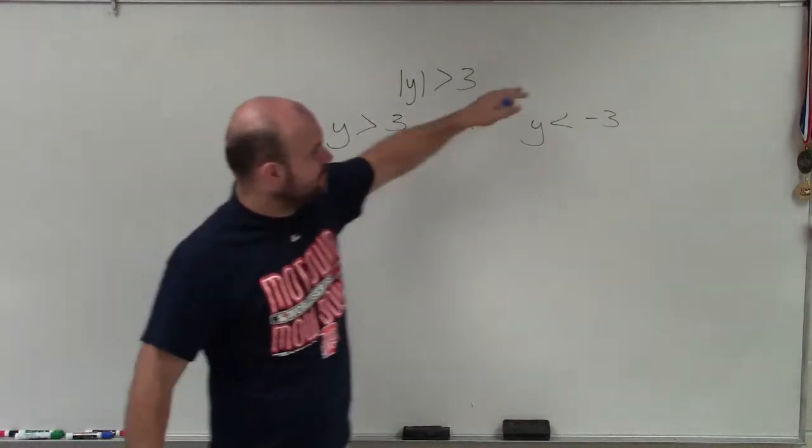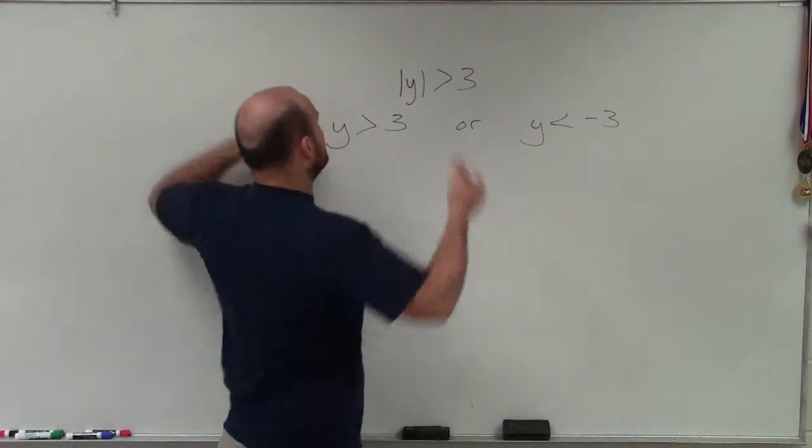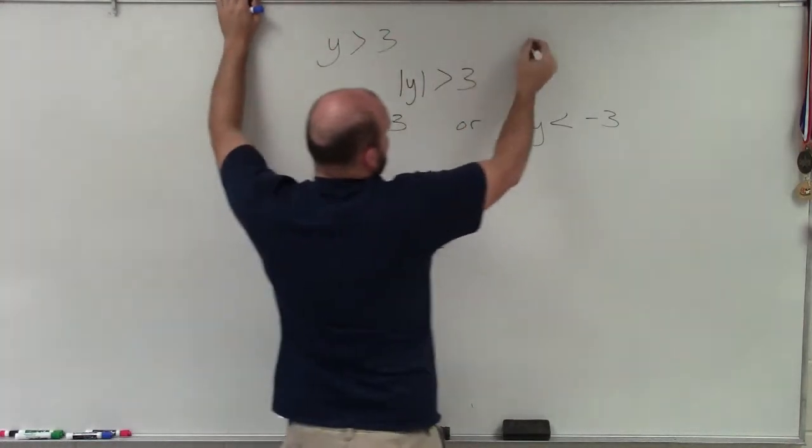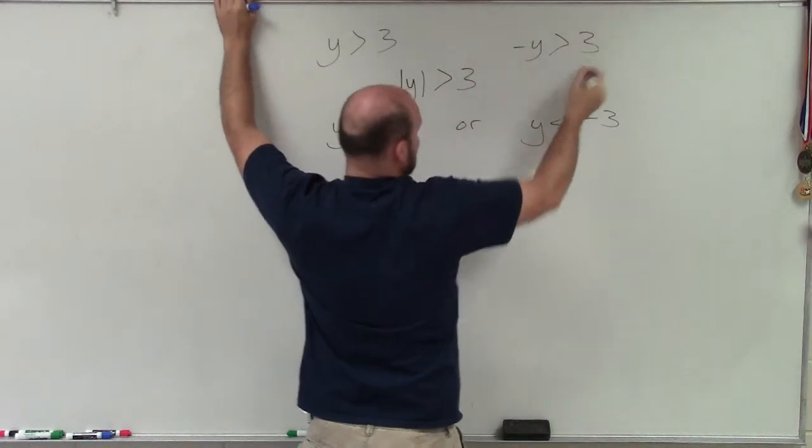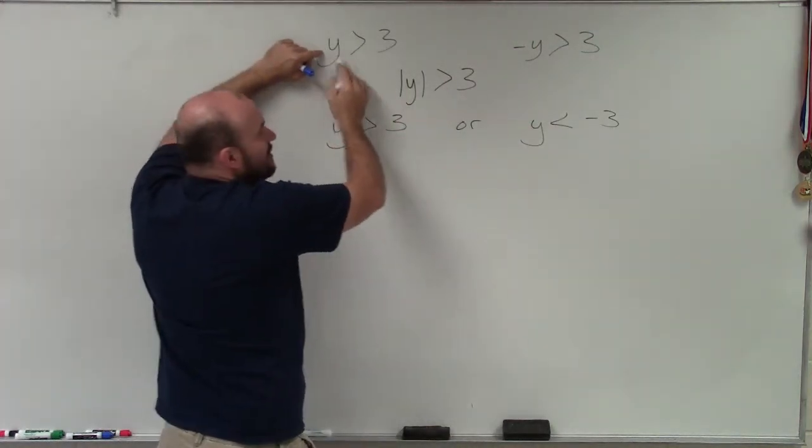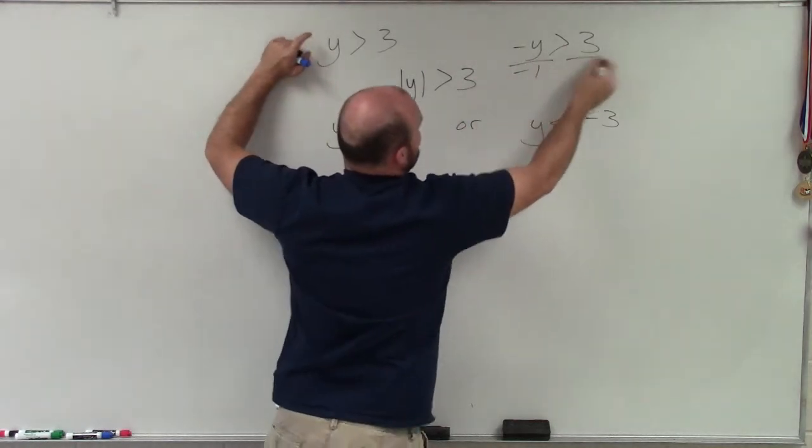And make sure that when you're creating the 3 to be negative and you're flipping the sign. And the reason why we came up with that, if I say y is greater than 3, you could say negative y has to be greater than negative 3. Well, think about a number that's greater than 3, like 5. Well, we know that negative 5 is not greater than negative 3.